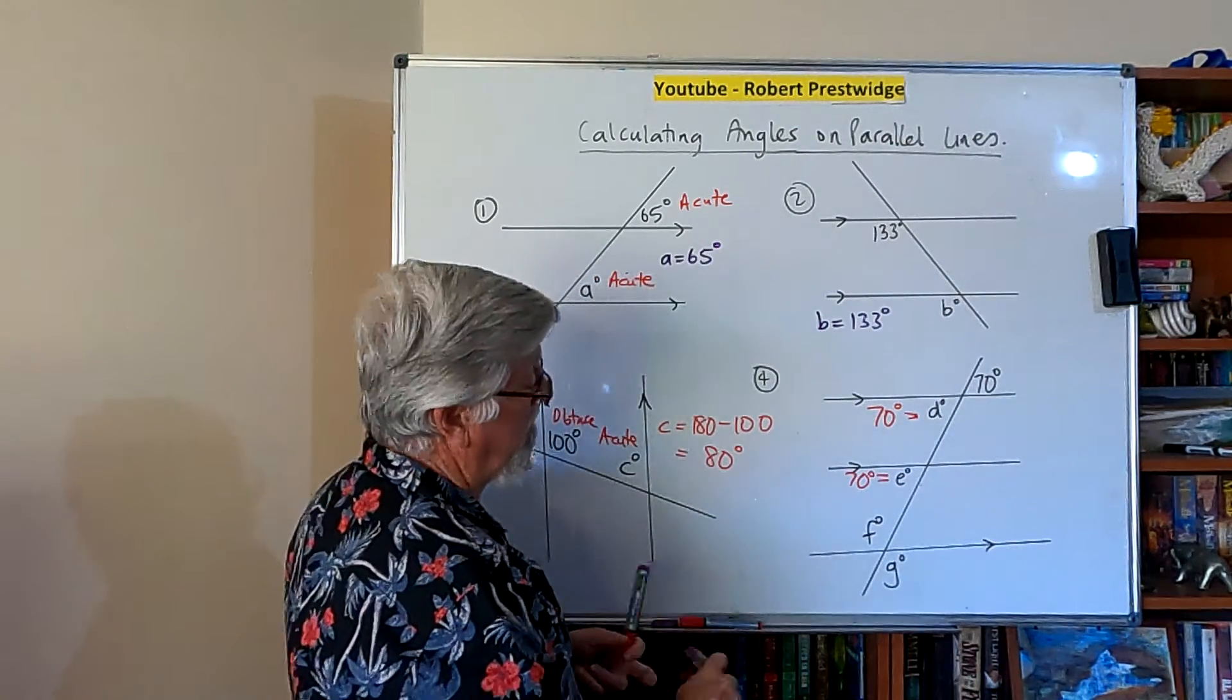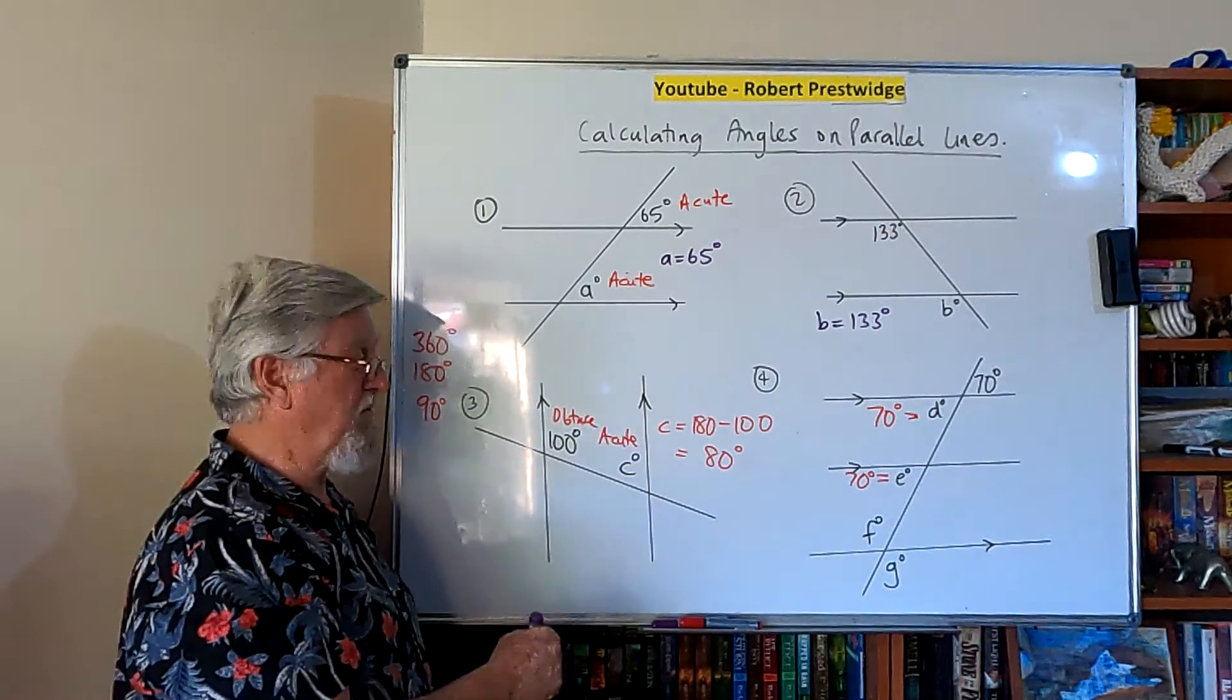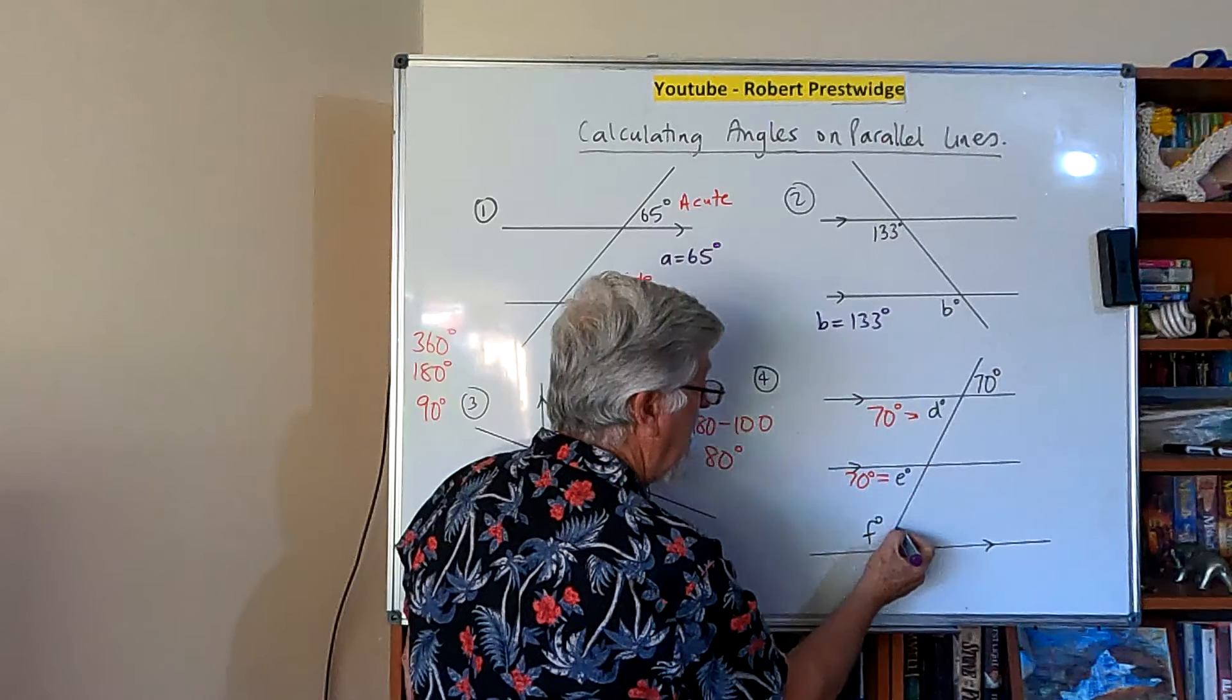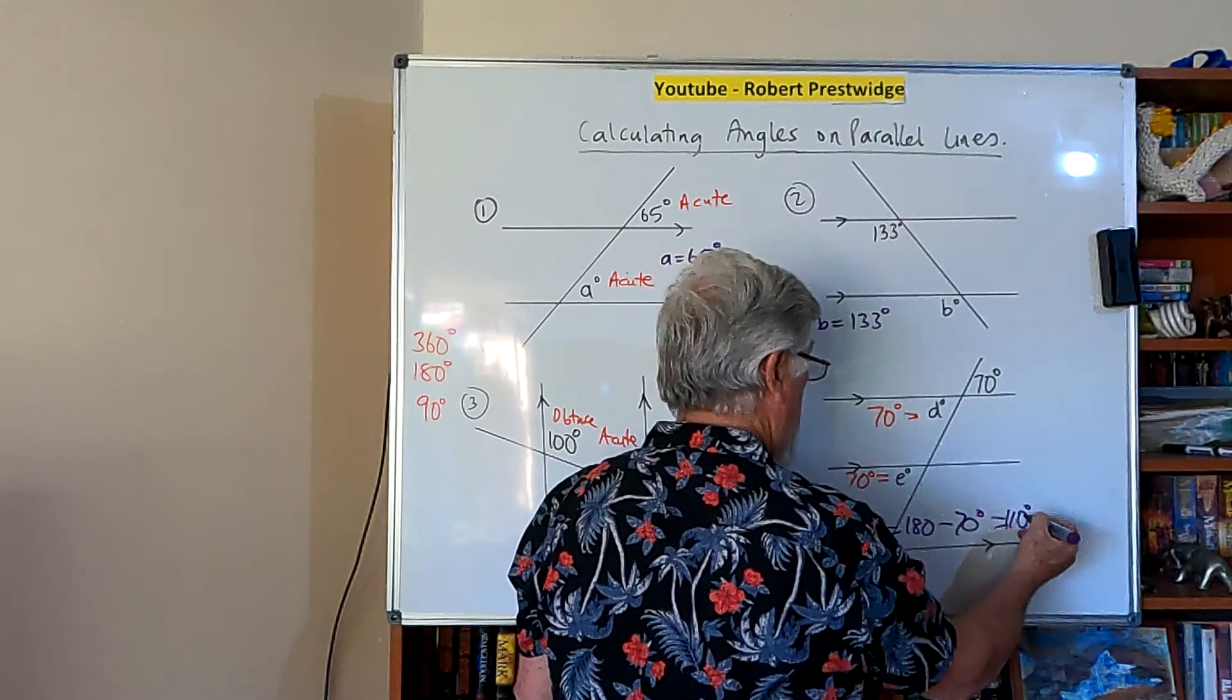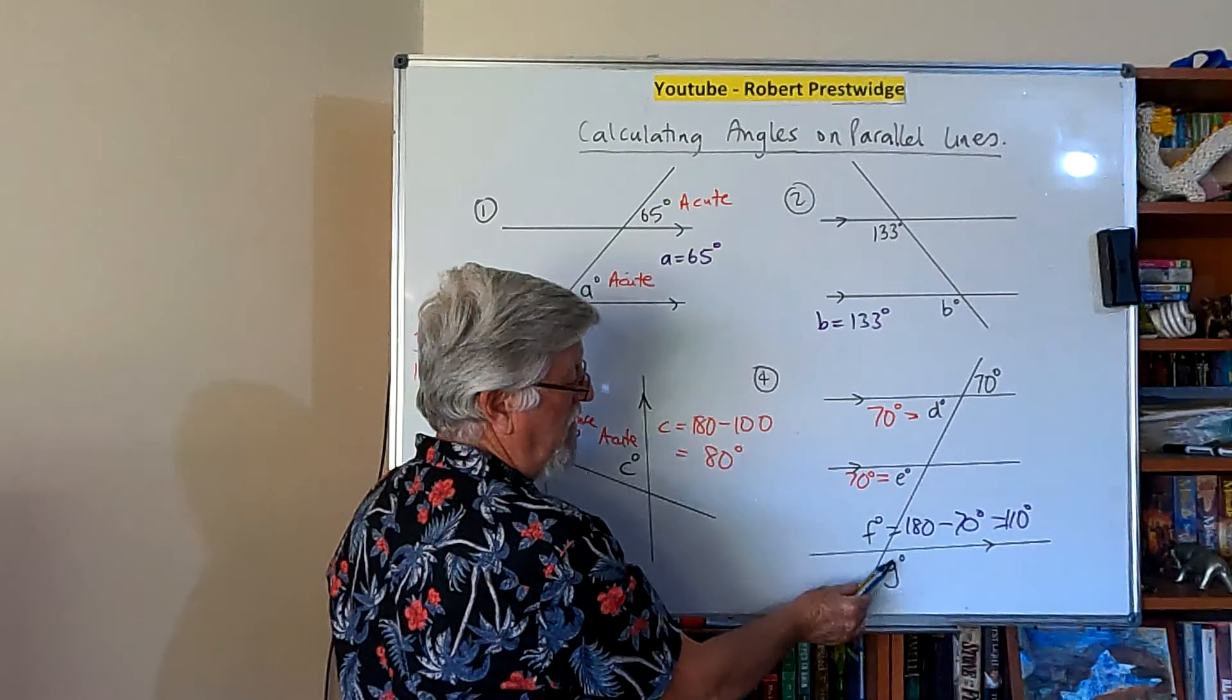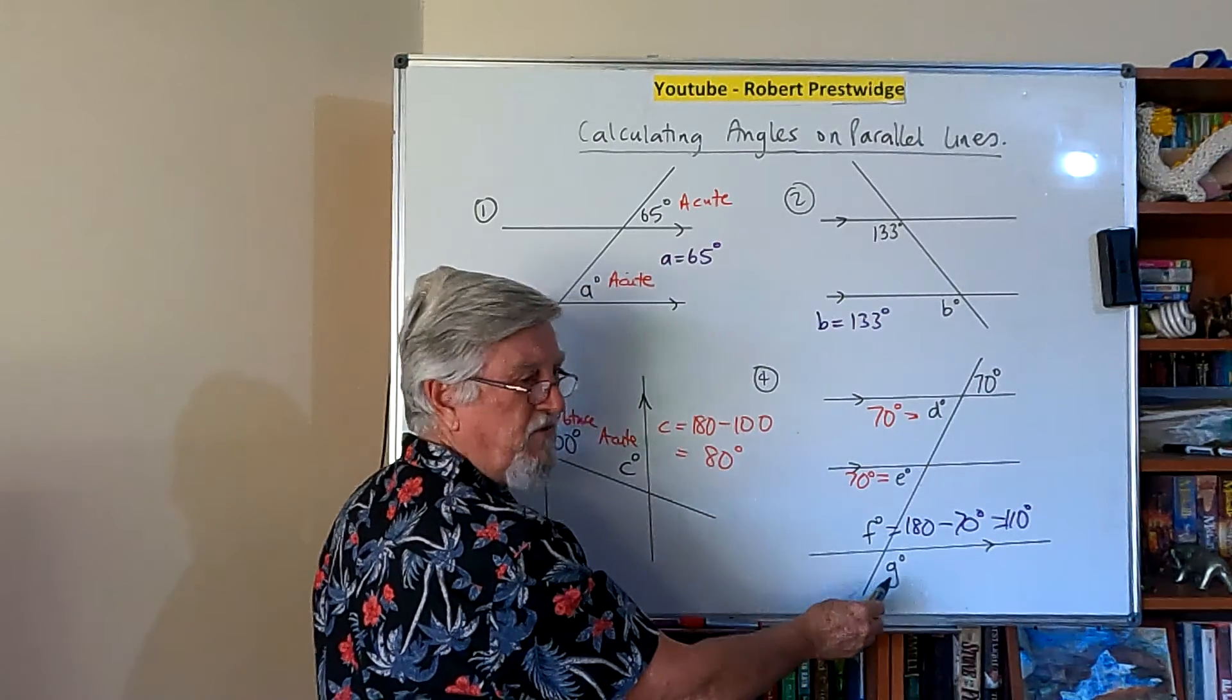Then the tricky one. This one's less than 90, acute. This one's bigger than 90, obtuse. And the acute and the obtuse add up to 180. So how do I get F? I just go 180 minus the 70. And I get 110 degrees. And the last one, if this one here is obtuse, goes straight across where two lines cross over, they're called vertically opposite angles. If this one's 110, this one's also 110.